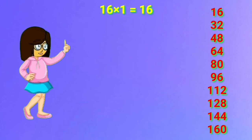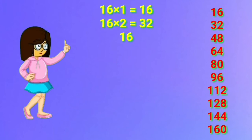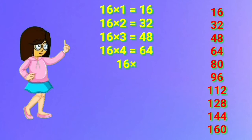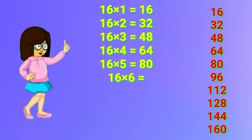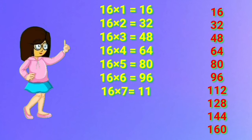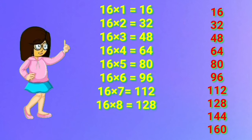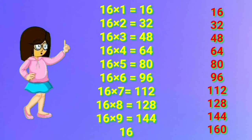16 one's are 16. 16 two's are 32. 16 three's are 48. 16 four's are 64. 16 five's are 80. 16 six's are 96. 16 seven's are 112. 16 eight's are 128. 16 nine's are 144. 16 ten's are 160.